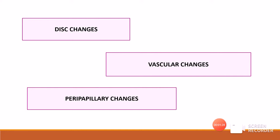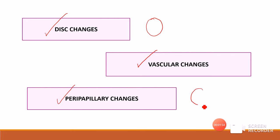Whenever we are studying the fundus in glaucoma, we have to see basically three types of changes. Number one, the changes which occur at the disc or in the morphology of the disc. Number two, the changes which occur in the vessels present on the disc — these are called vascular changes. Number three, the peripapillary changes, which are the changes occurring in the retina surrounding the disc.